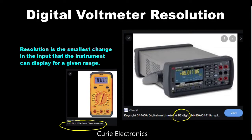The resolution is not the measurable value — it is the displayable value of the instrument. That means the measurement ability will be smaller than the display. But what is the minimum value the display can show? That is the resolution of the DVM.